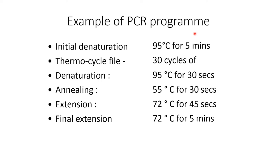An example PCR program: initial denaturation at 95 degrees centigrade for 5 minutes, followed by 30 thermocycles of denaturation at 95 degrees centigrade for 30 seconds, annealing at 55 degrees centigrade for 30 seconds, and extension at 72 degrees centigrade for 45 seconds. The final extension is at 72 degrees centigrade for 5 minutes.